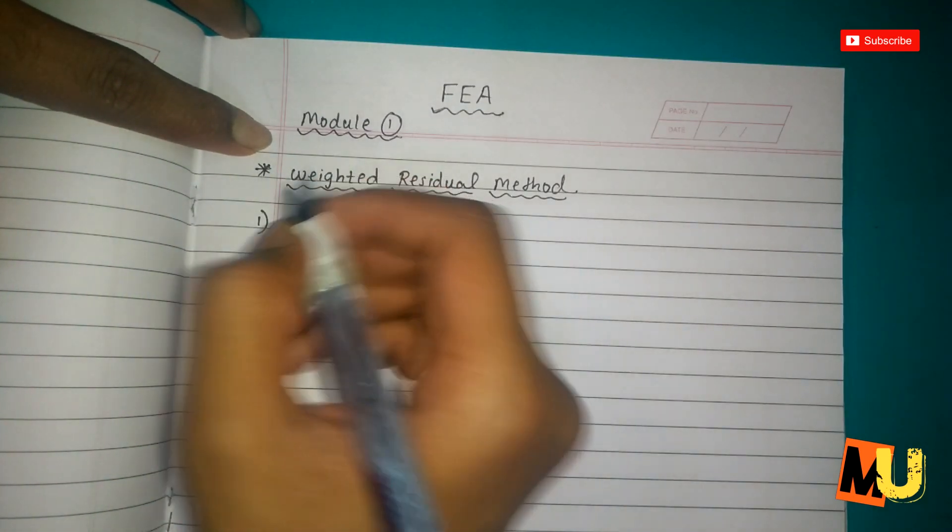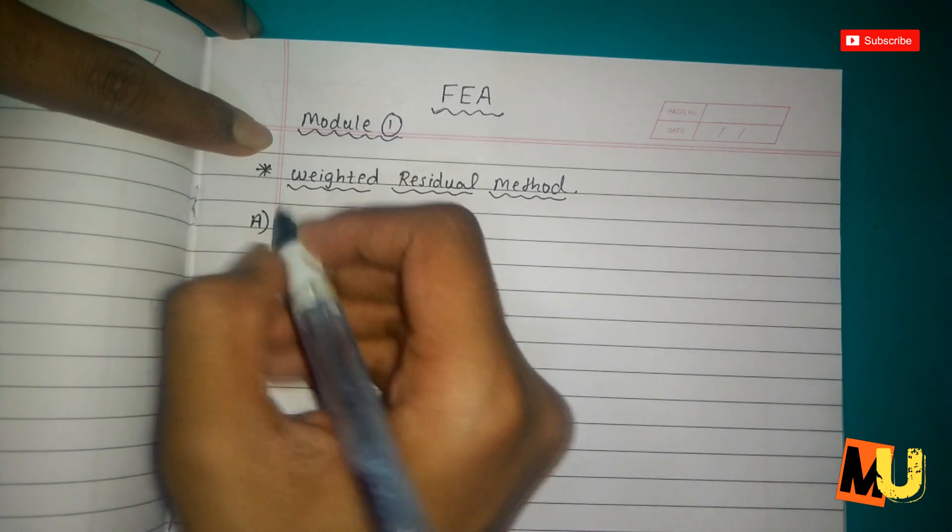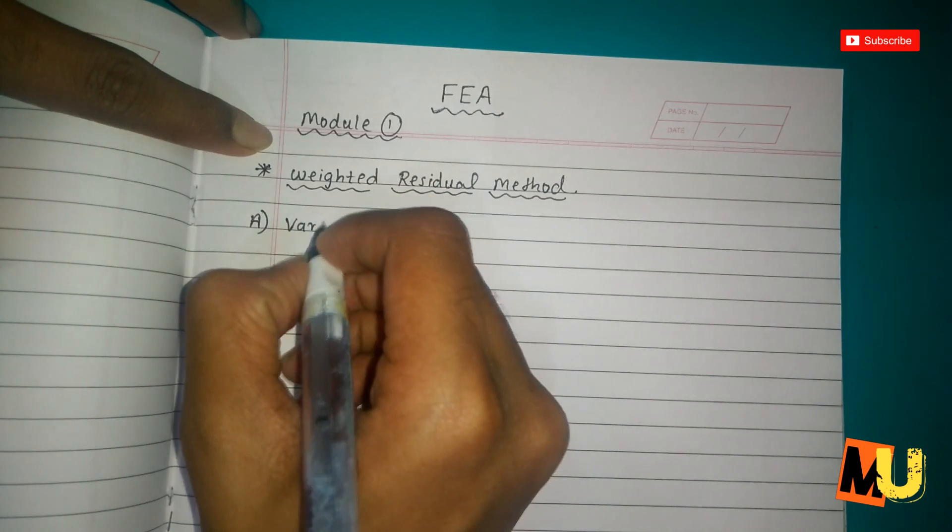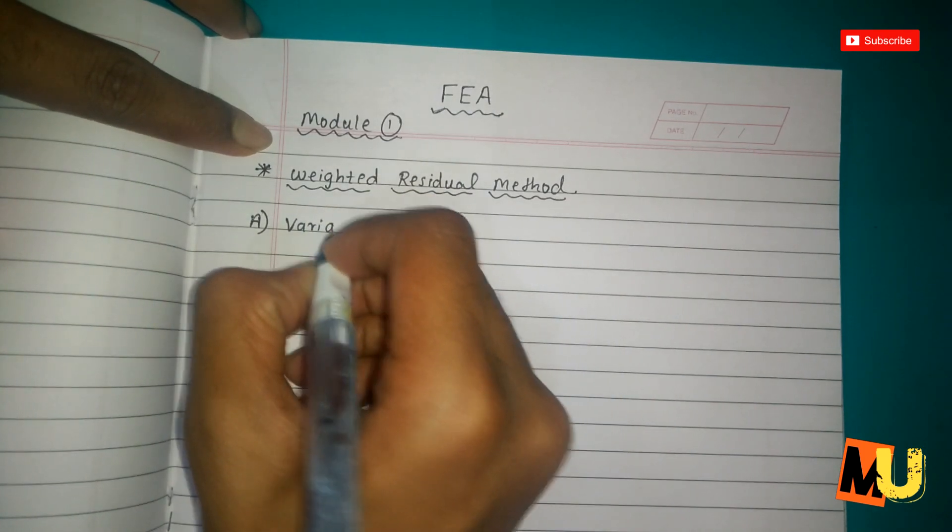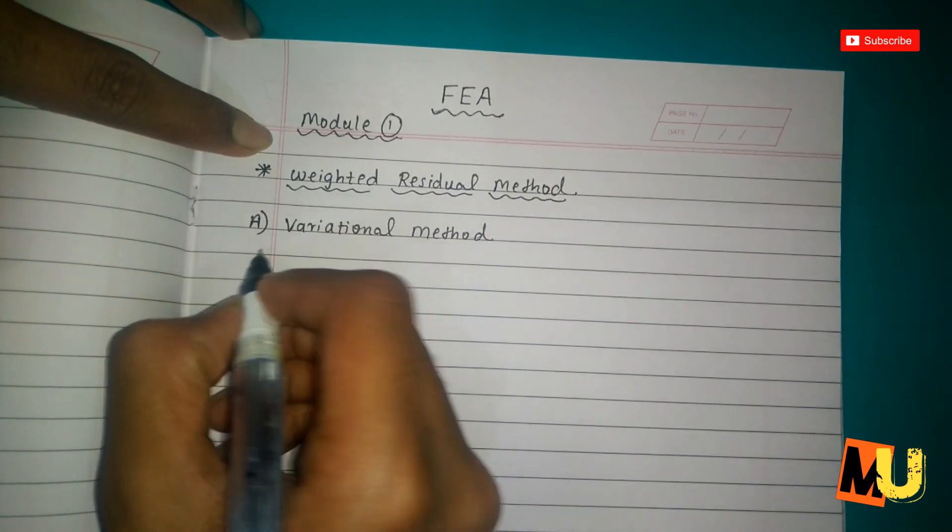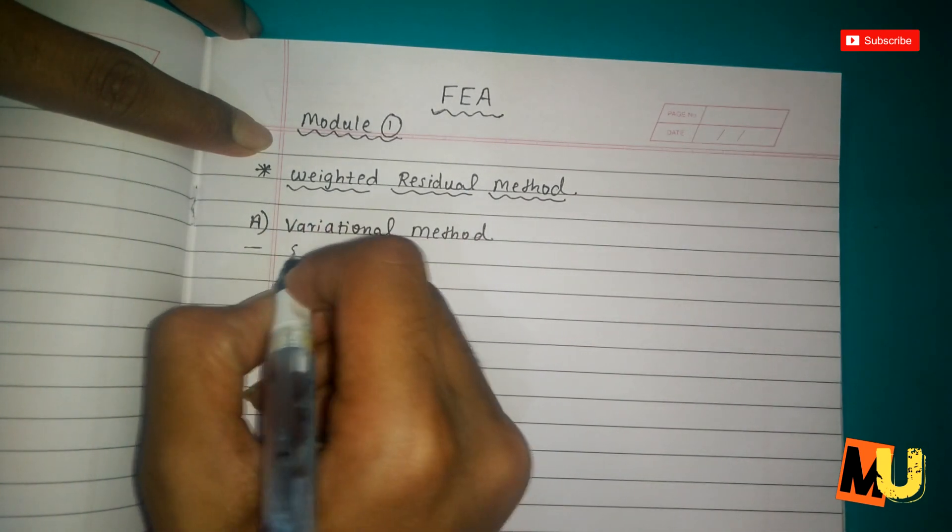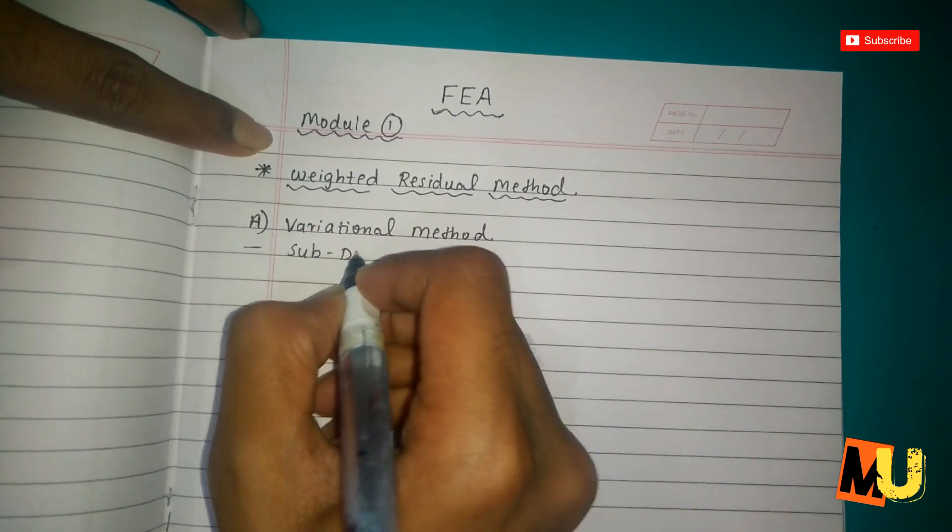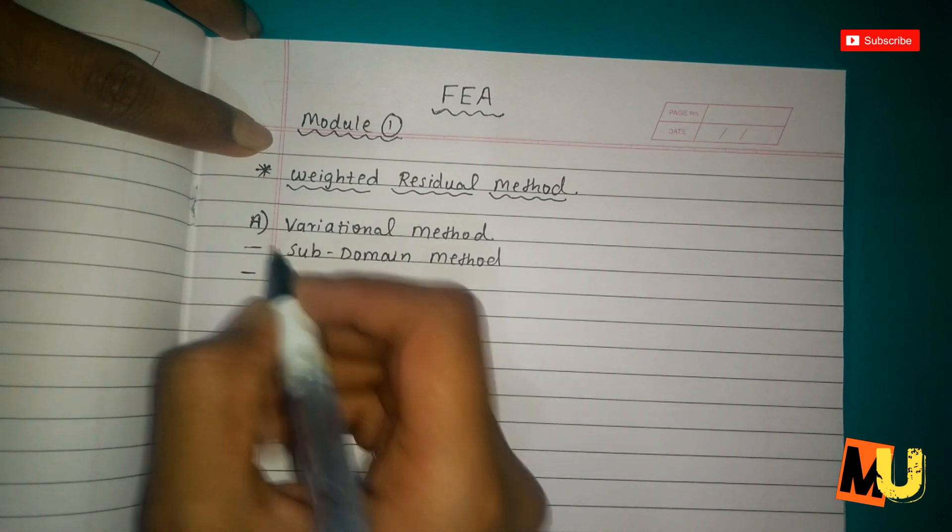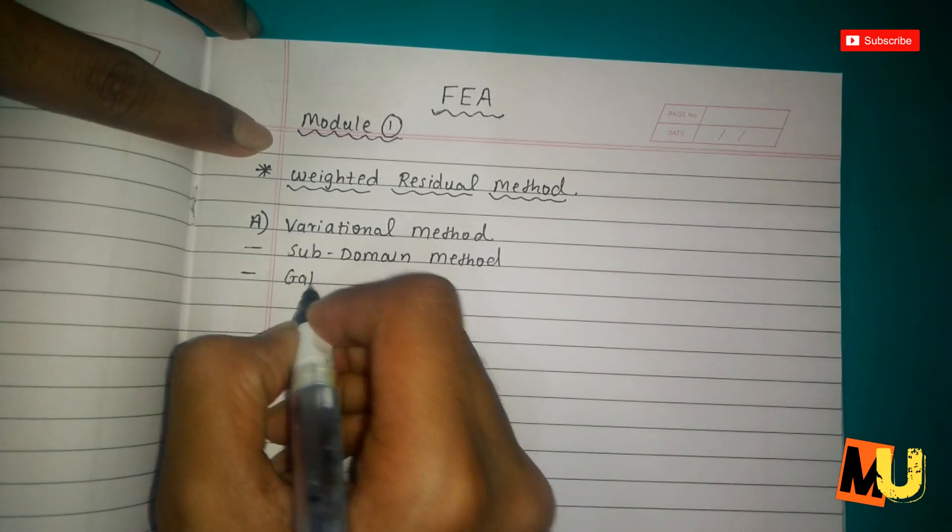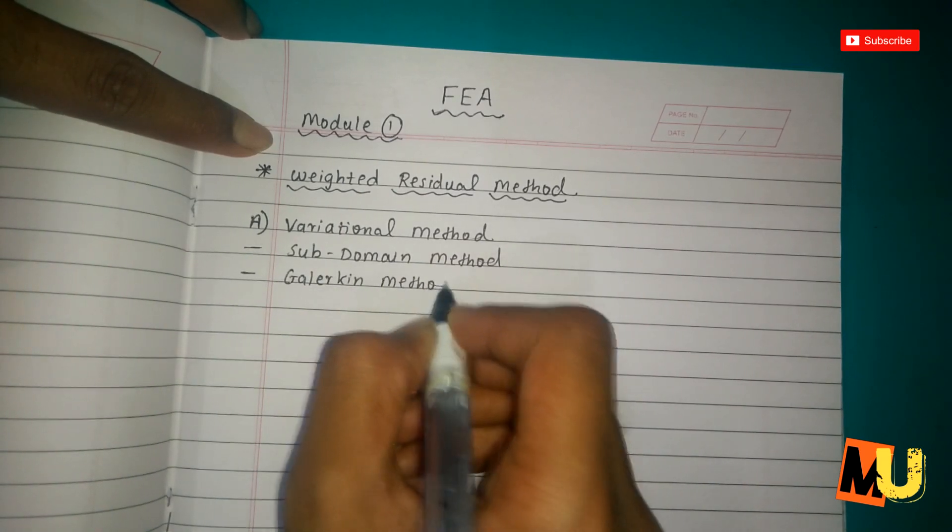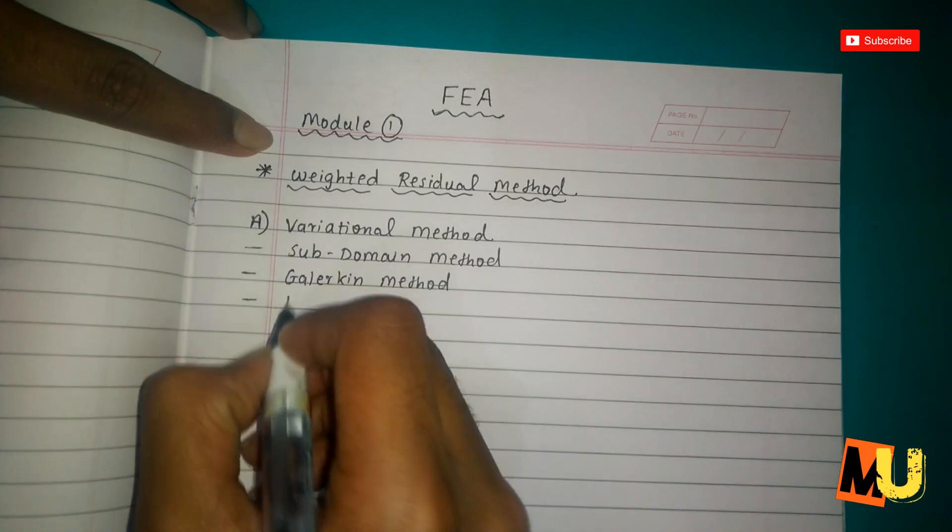We are having variational methods. In that we have five types: subdomain method, then Galerkin method,